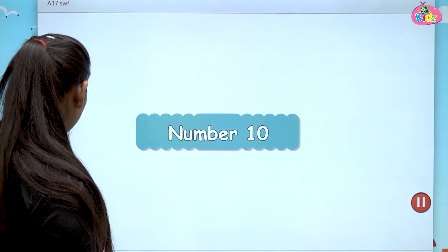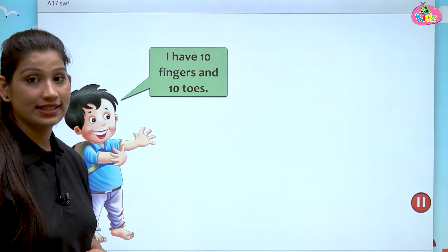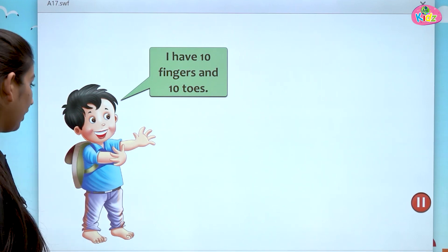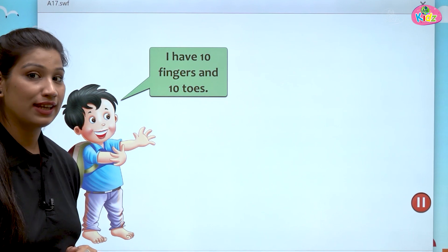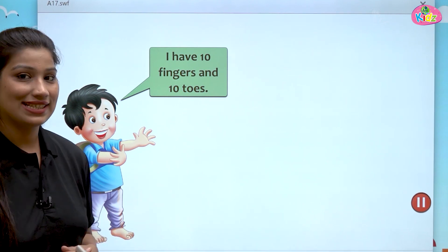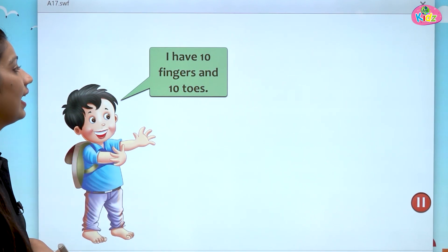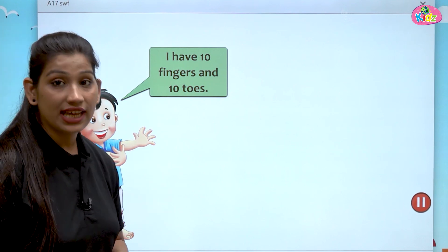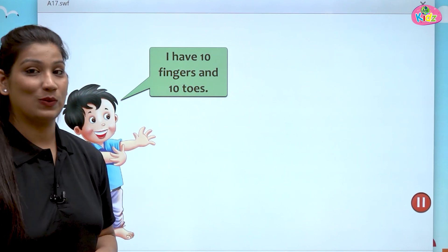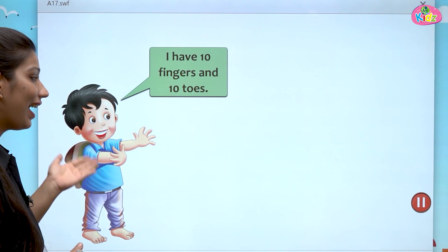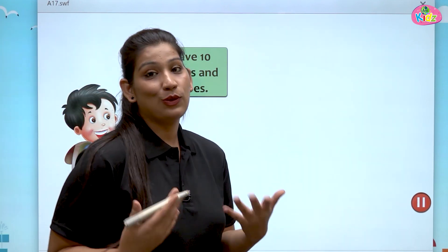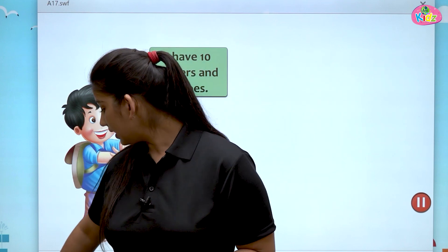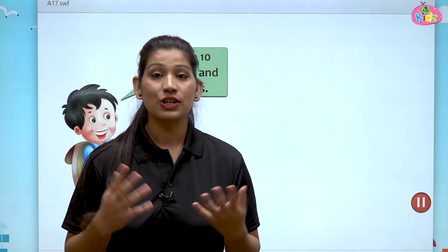Let us understand the concept through this video. Here you can see a boy, and this boy is telling you something. He is saying: I have 10 fingers and 10 toes. You can see ma'am also has fingers, so we have fingers.